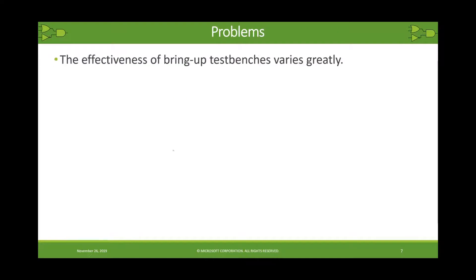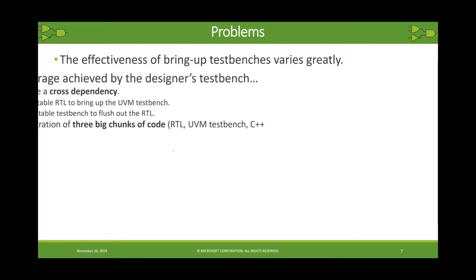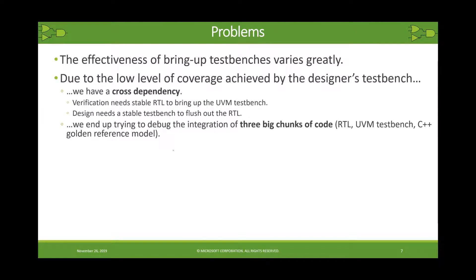With this paradigm we were seeing some problems. First, as I showed you on those previous slides, the sophistication of the bring-up test bench varies greatly, so the effectiveness of really bringing out those initial bugs is all over the map. Generally there's a low level of coverage achieved by the designer's test bench. In the worst case, we had this ugly cross-dependency where the verification engineer is trying to bring up their own piece of complex code — namely the UVM test bench — and so you'd like to have stable RTL to bring that up. However, it would be handy for the designer to have a stable test bench to flush out the RTL.